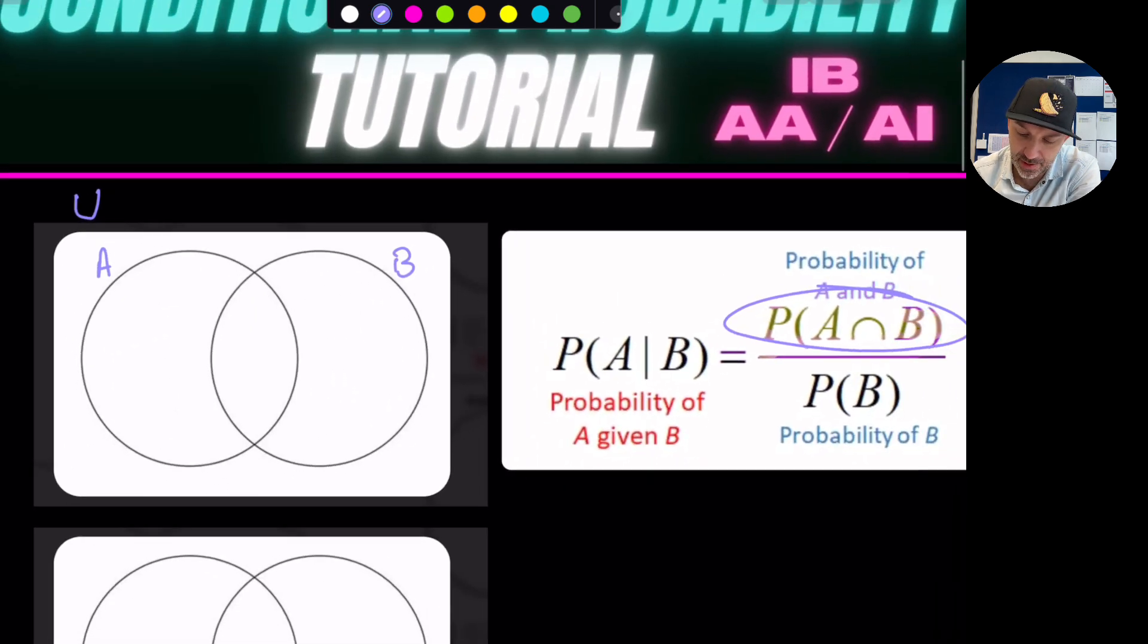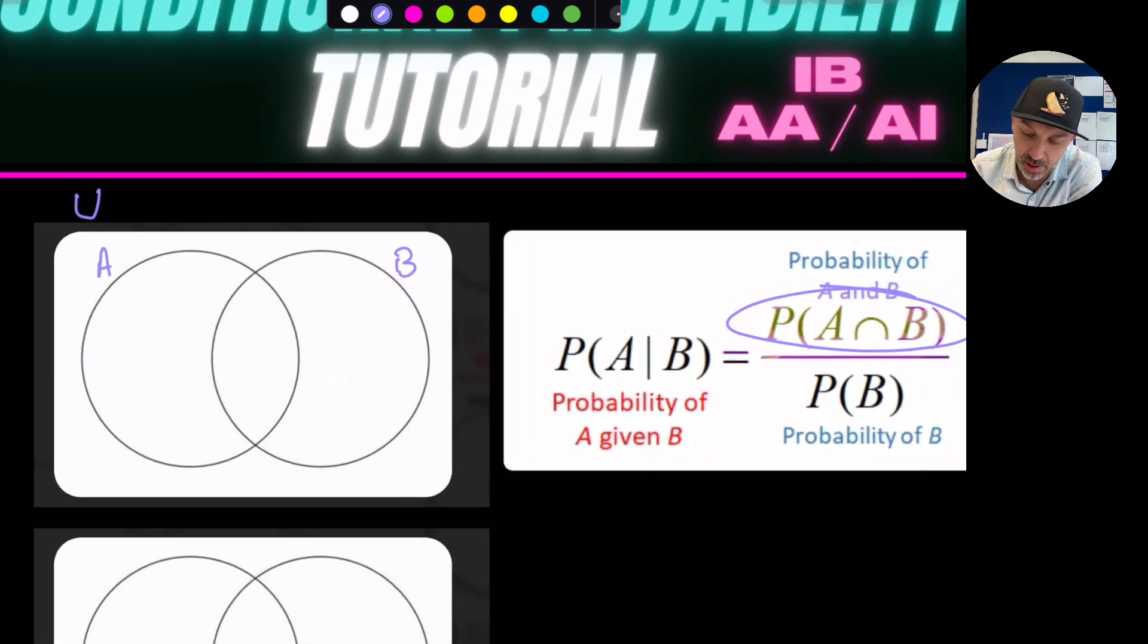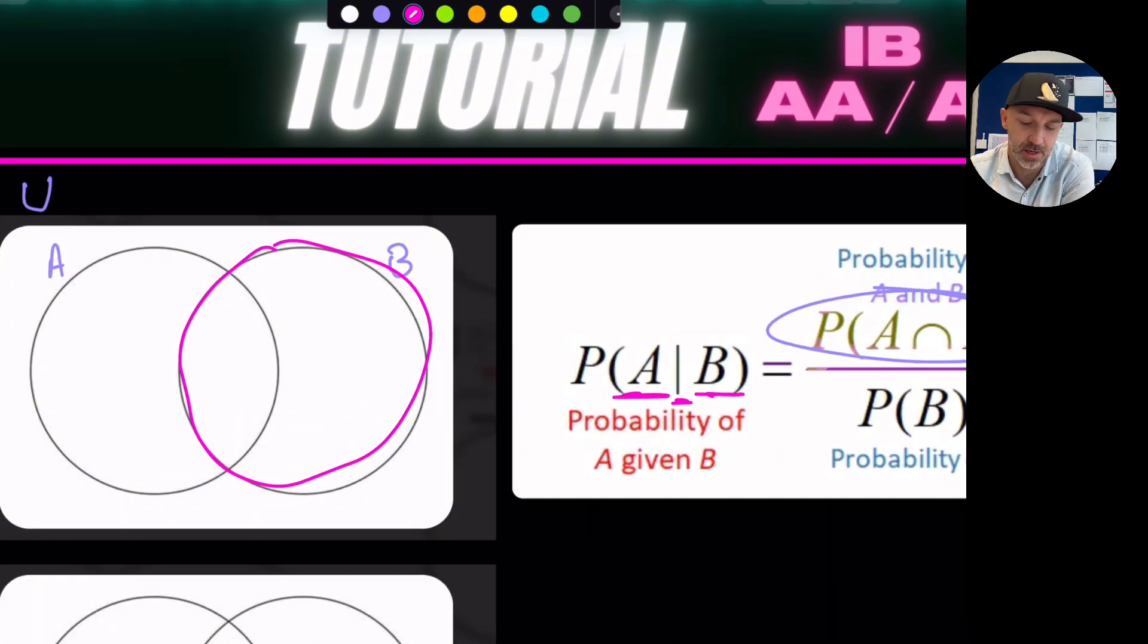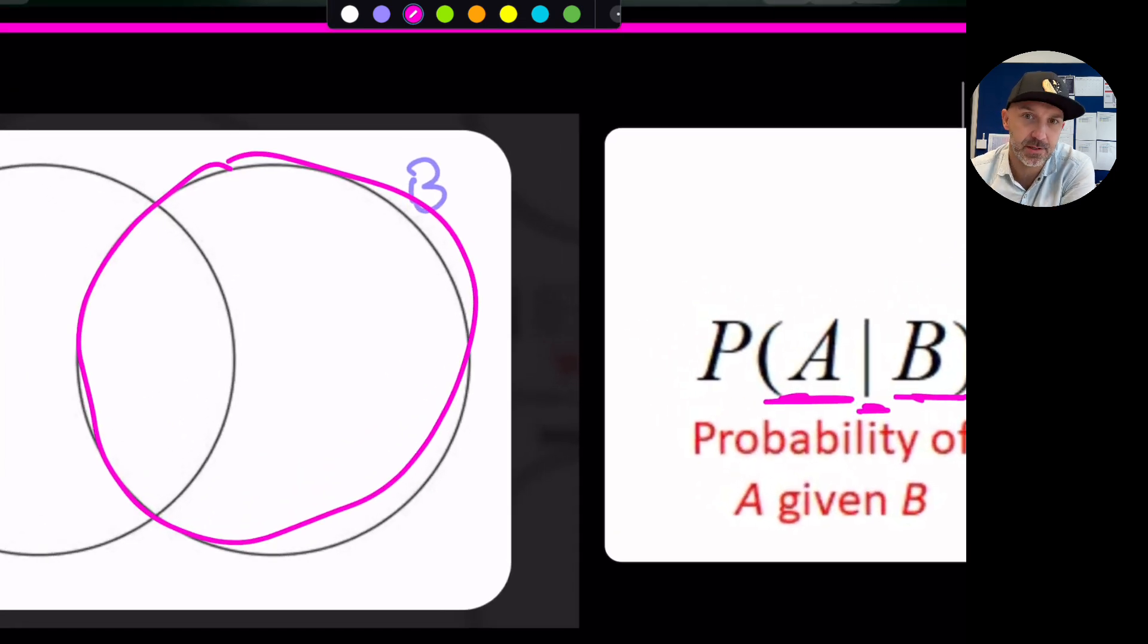So if we go back to the Venn diagram what we'll do is I will circle B. Okay so this is event B has happened. So what we want to do is to only look at event B. Now it says what is the probability of A happening given B has happened. So what we're doing is we're basically sort of ring fencing event B off. Okay so we're only going to be looking inside this pink circle.